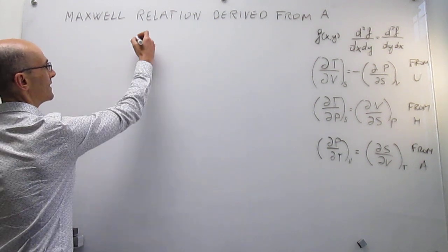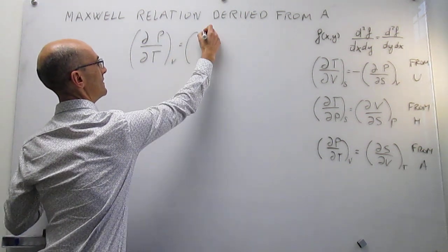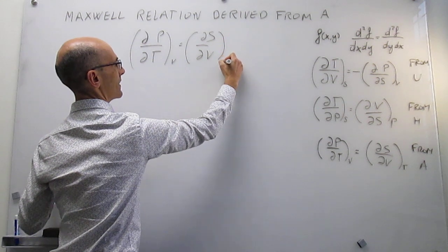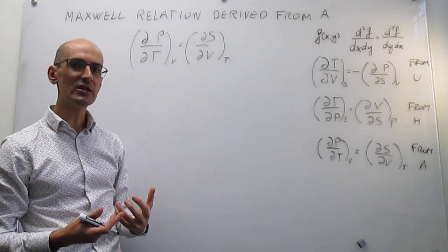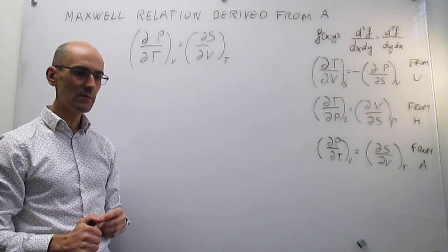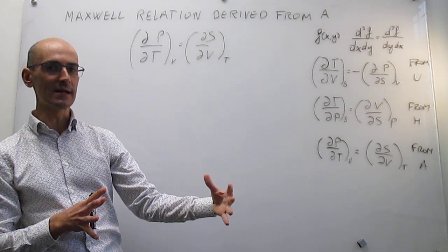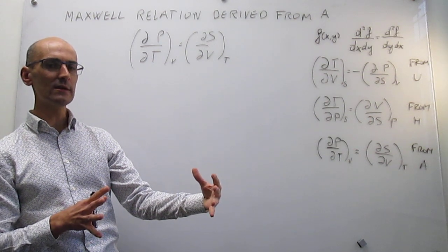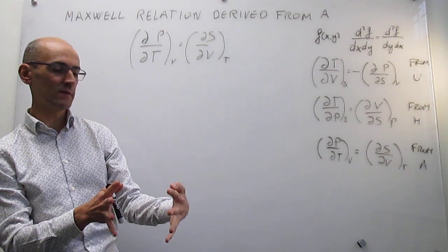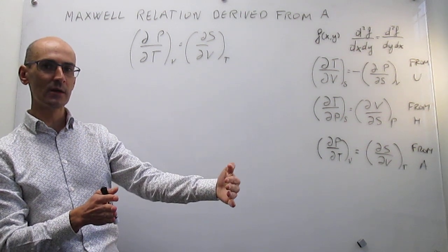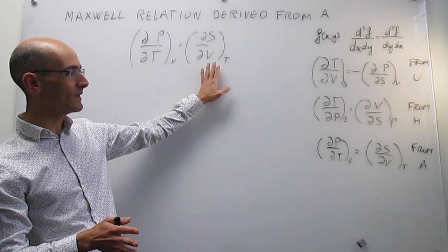Let me write that Maxwell relation here on top so that we can have a closer look at it and begin to think about it. What we have here is how the entropy changes with volume isothermally. You can imagine that you have a gas inside a cylinder and now that gas is going to undergo an isothermal gas expansion. The idea is to see if we can get an expression for how that entropy is changing with volume. If you increase the volume for that gas, then the entropy is going to increase — you increase the number of microstates and the entropy should increase.